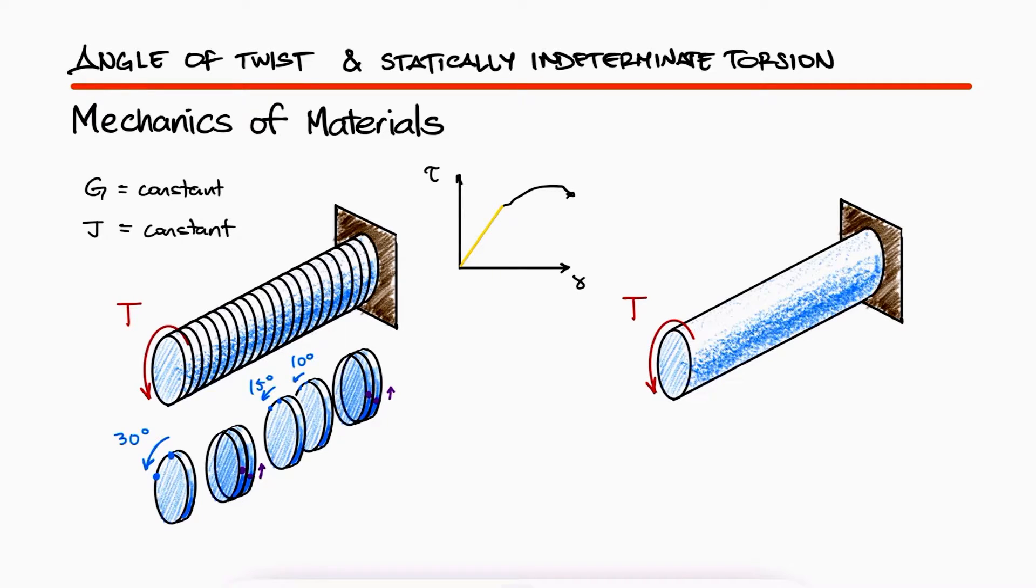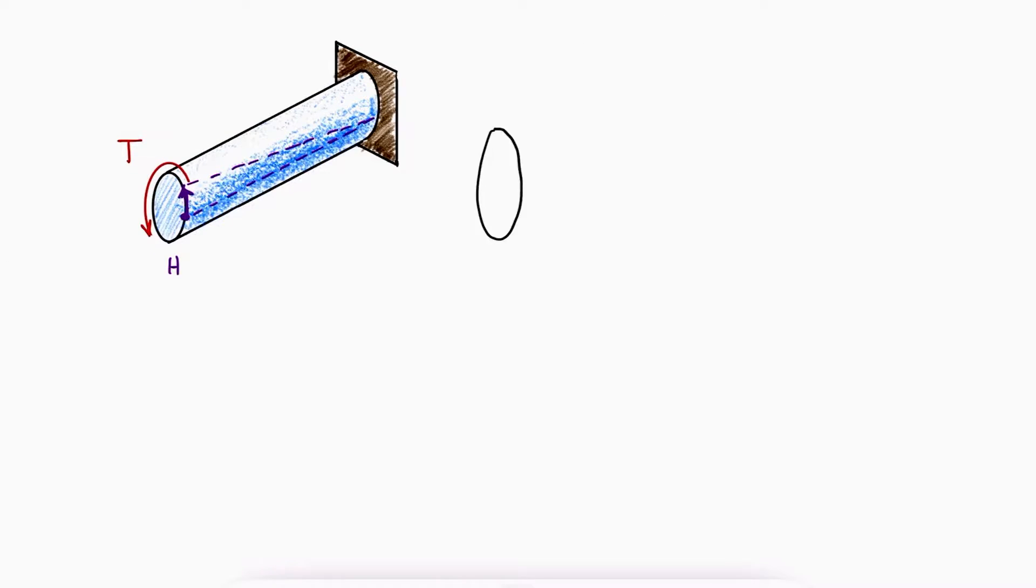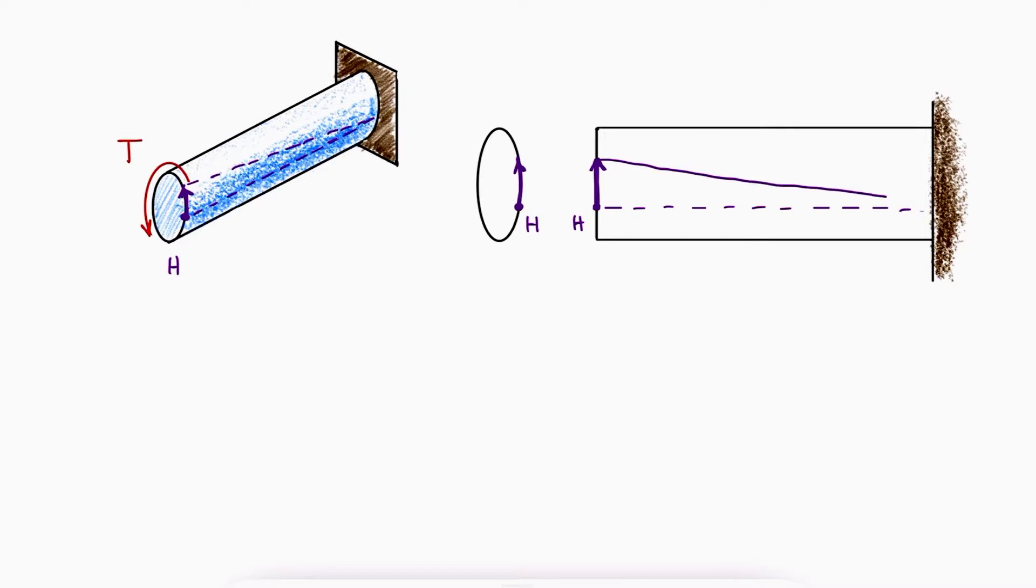We can see how point H that was originally on the right side of the center of the rod would have translated along the surface of the rod due to the rotation of that disk. By looking at the side view of the rod, we can see how the elements on the surface have deformed. They will have translated upward, but they will have also deformed under shear.